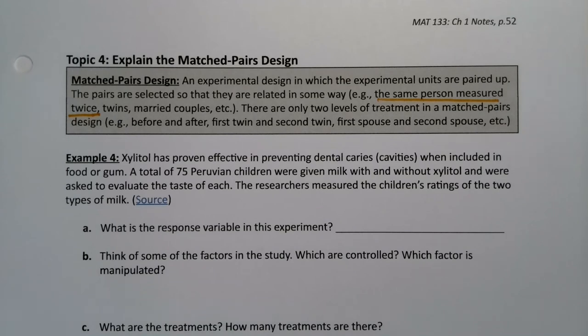There are only two levels of treatment in a matched pairs design: before and after, the first twin and the second twin, the first spouse and the second spouse. That's it — there's always just those two levels of treatment.